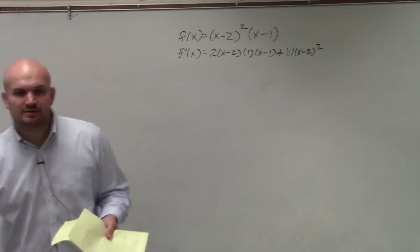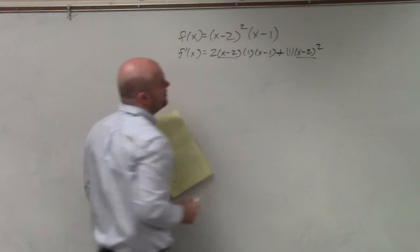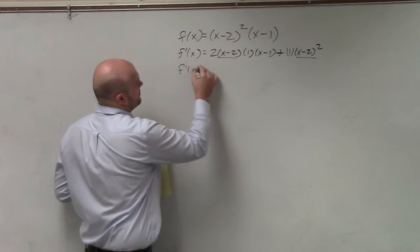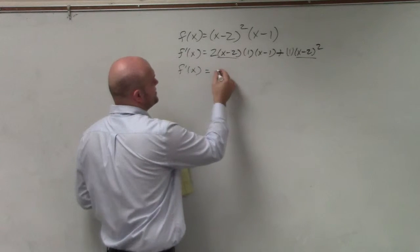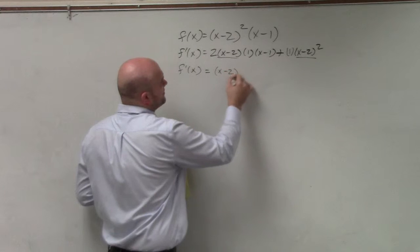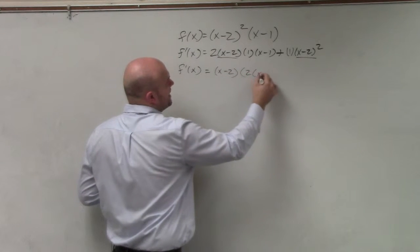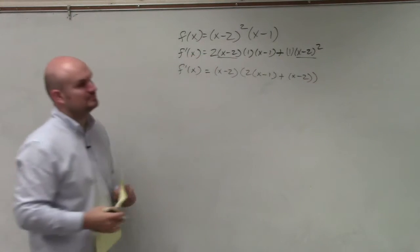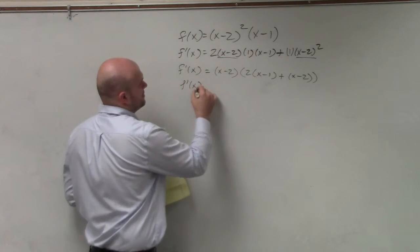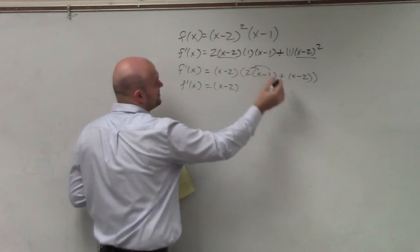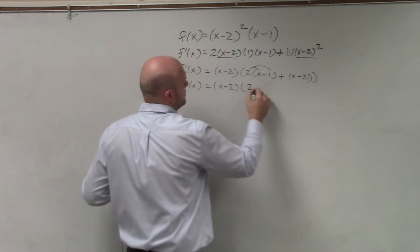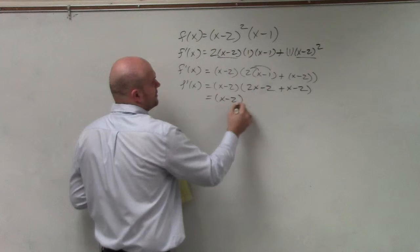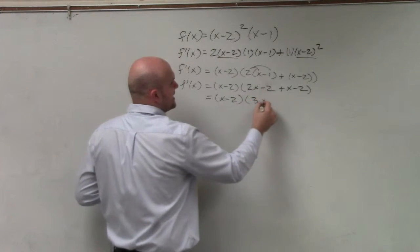Now, this looks like a whole jumbled mess, but what I do realize is they both have an (x - 2) that I can factor out. So if I factor out this (x - 2), what I'm left with is (x - 2) times (2x - 1) plus (x - 2). This is pretty nice, because then I have (x - 2). I can distribute that, and this becomes 3x - 4.